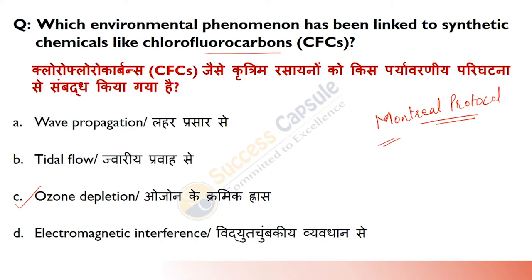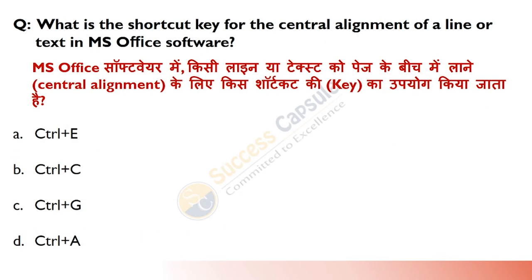What is the shortcut key for center alignment of text in MS Office? Answer is A — Ctrl+E, which aligns text to center. Ctrl+C is copy, Ctrl+G is find and replace, and Ctrl+A is select all.